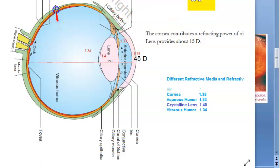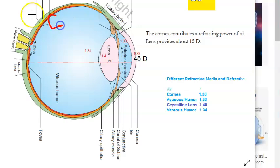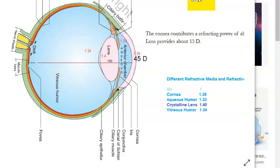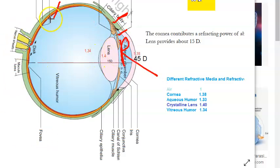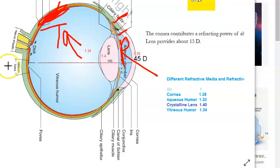Posterior uveitis affects the choroid — choroiditis or chorioretinitis. Because it is at the back of the eye, systemic treatment is required rather than topical. There is loss of vision. It can be caused by toxoplasmosis, in which case anti-parasitic drugs are also given in addition to systemic steroids.